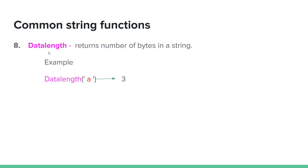DATALENGTH returns the number of bytes in a string. For example, DATALENGTH of a string like space-a-space will count the bytes, tagging all characters including spaces.